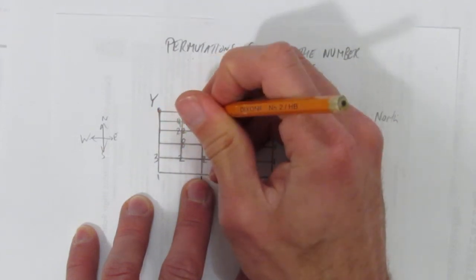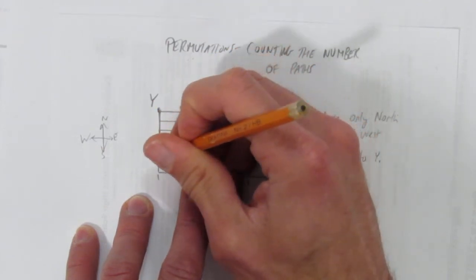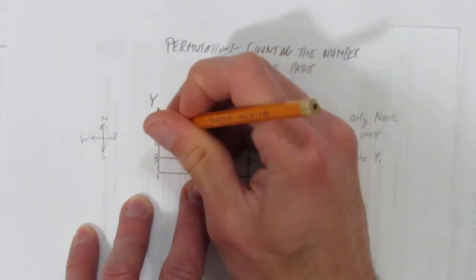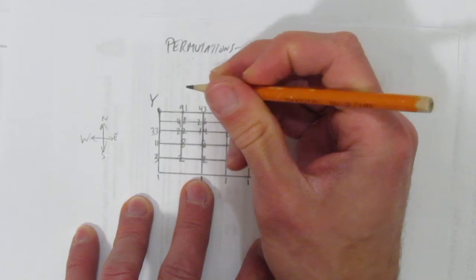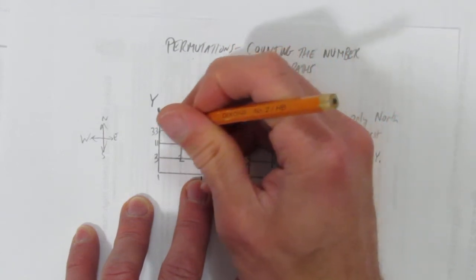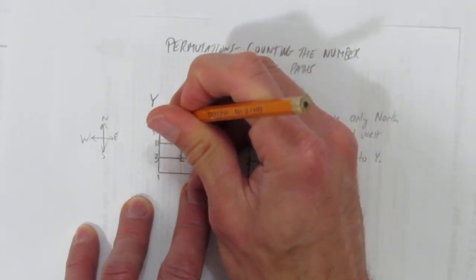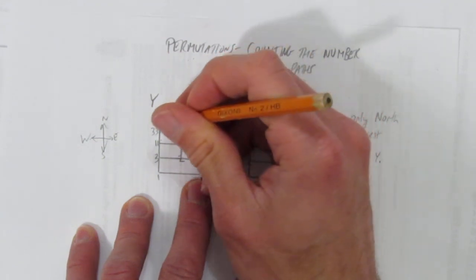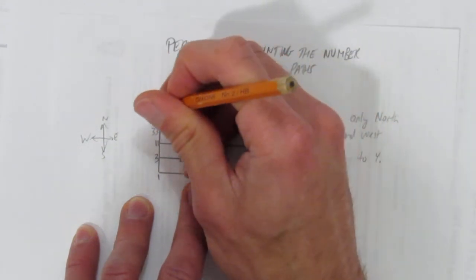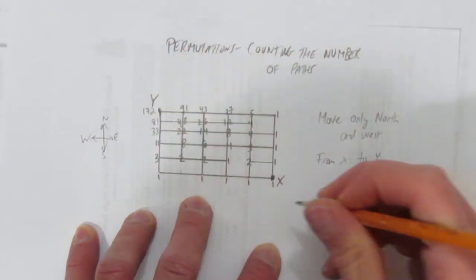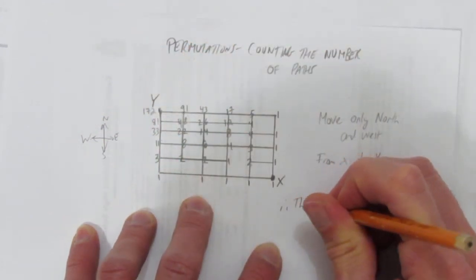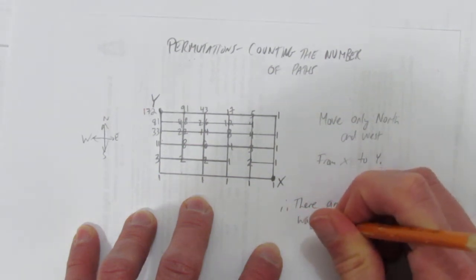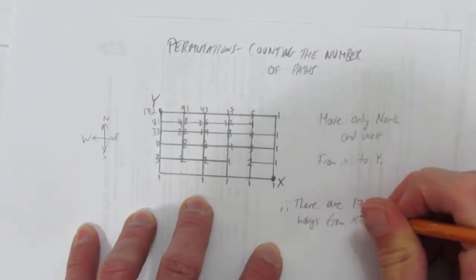I want to go to y, but first I have to calculate these spots. Eight plus three means eleven ways to get here. Twenty-two plus eleven means thirty-three ways to get here. Forty-eight plus thirty-three means eighty-one ways to get to this intersection. And finally, to y, eighty-one plus ninety-one is a hundred and seventy-two. Therefore, there are one hundred and seventy-two ways from x to y.